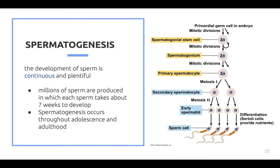Spermatogenesis is the development of sperm, which is continuous and plentiful. More sperm means better chances of fertilization. Millions of sperm are produced, and each sperm takes about seven weeks to develop. This process occurs throughout adolescence and adulthood.